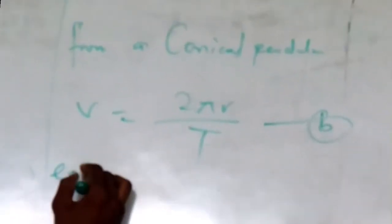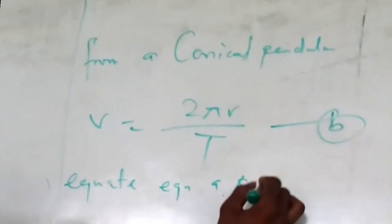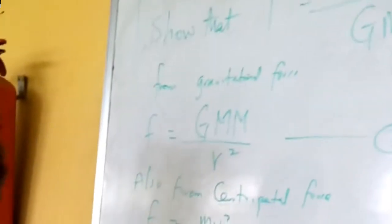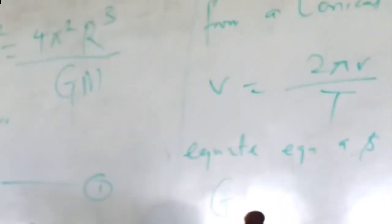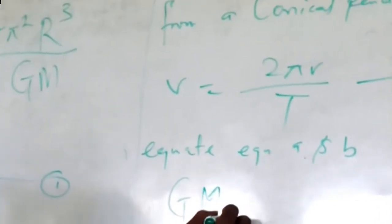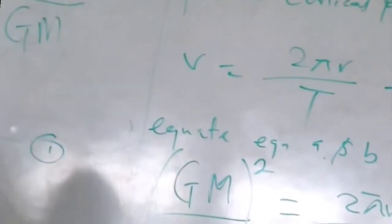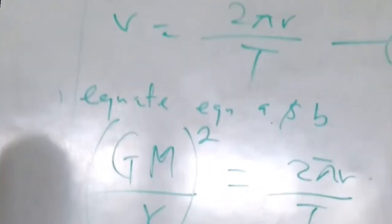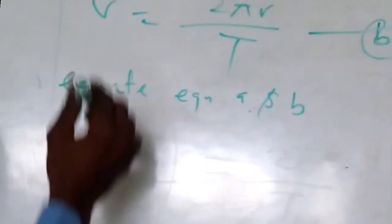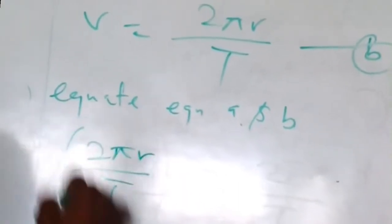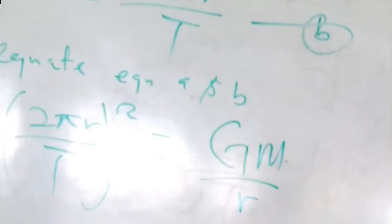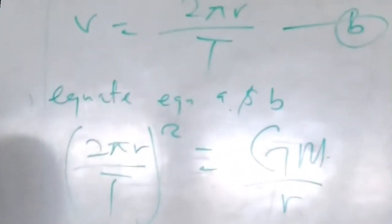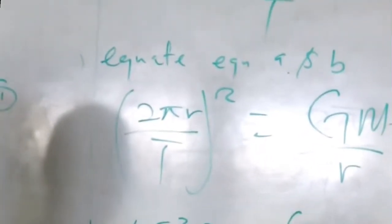Substituting v = 2πr/T into equation 3, and remembering that it is v squared, we get (2πr/T)² equals GM over r. Expanding the left side gives 4π²r² over T² equals GM over r.